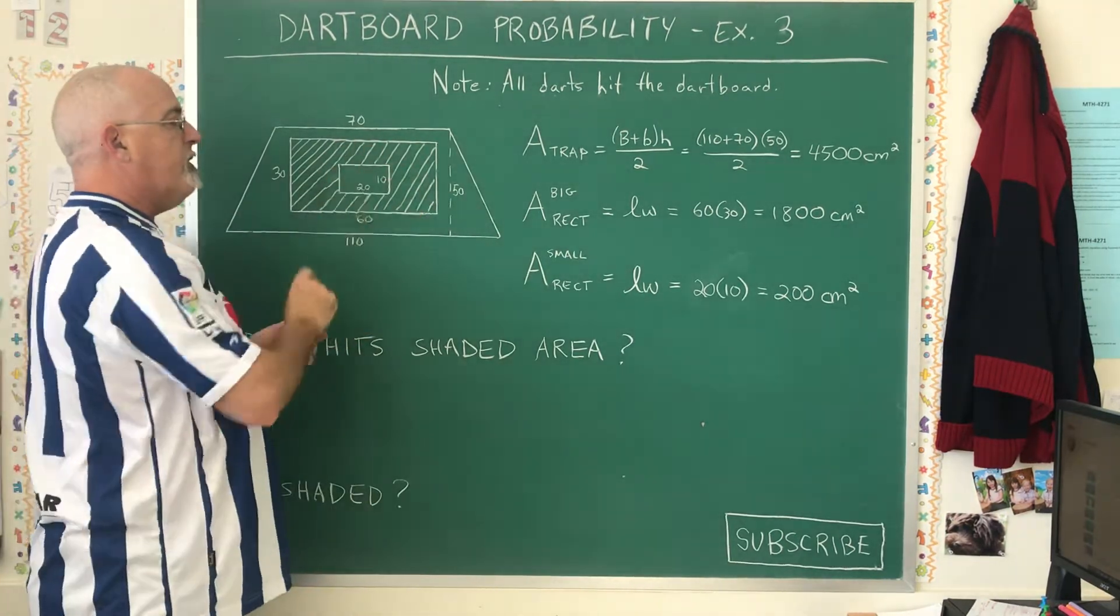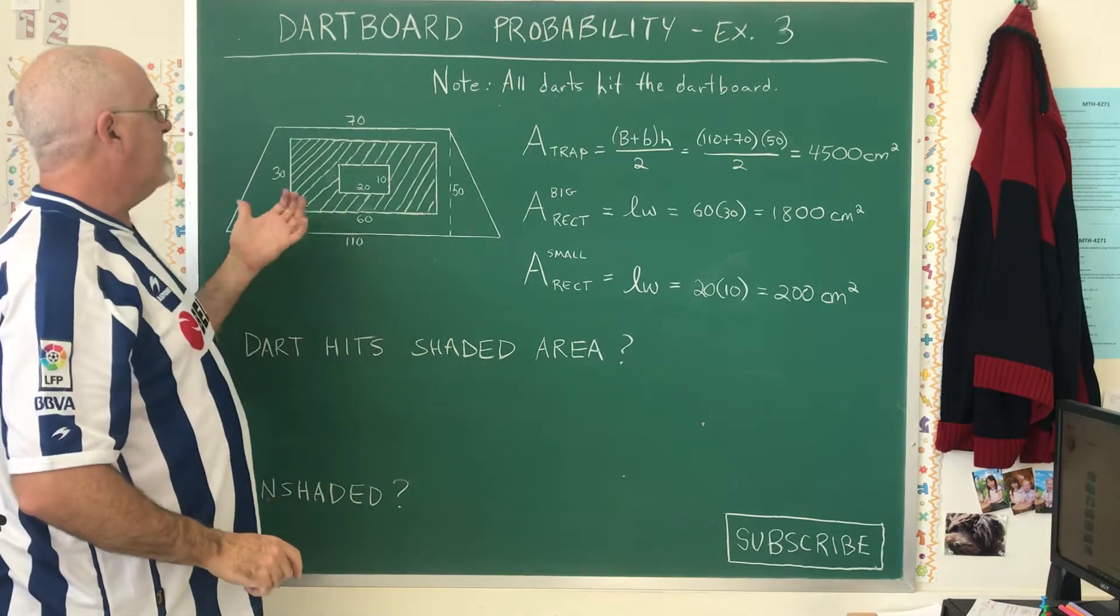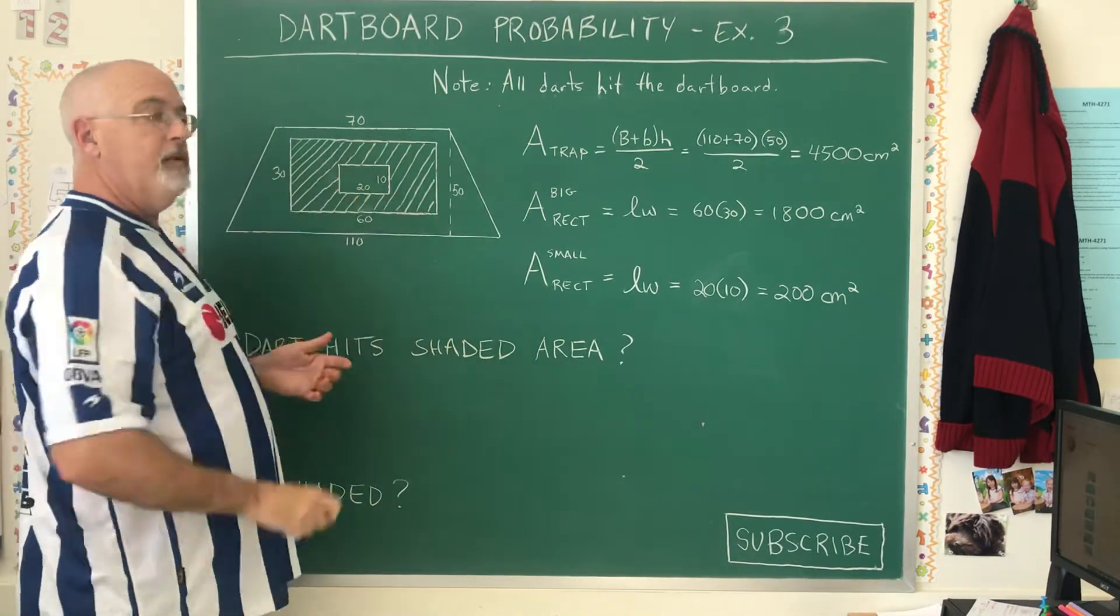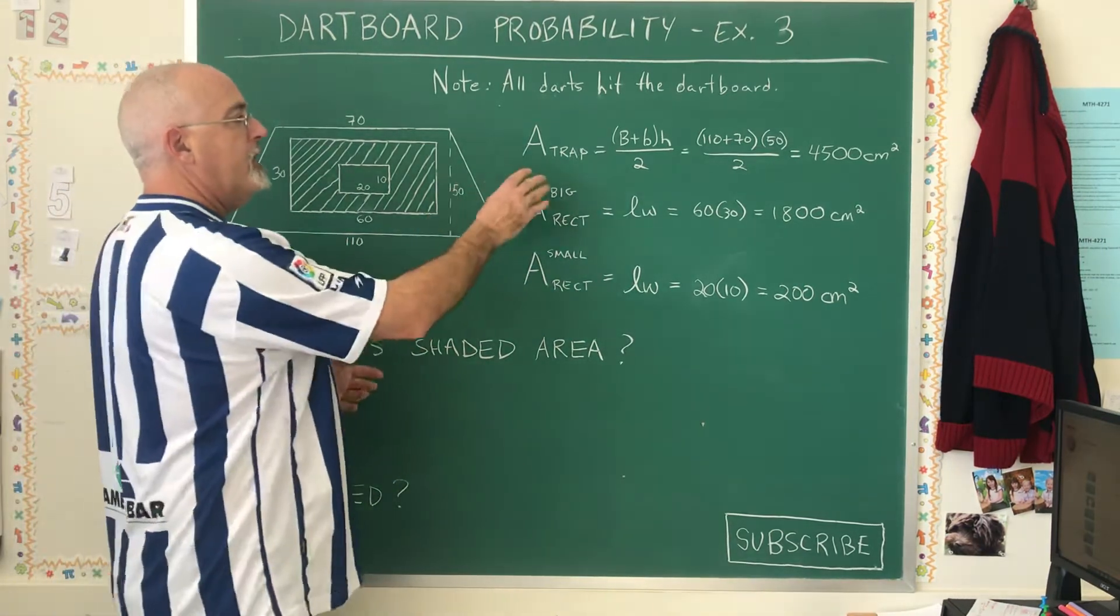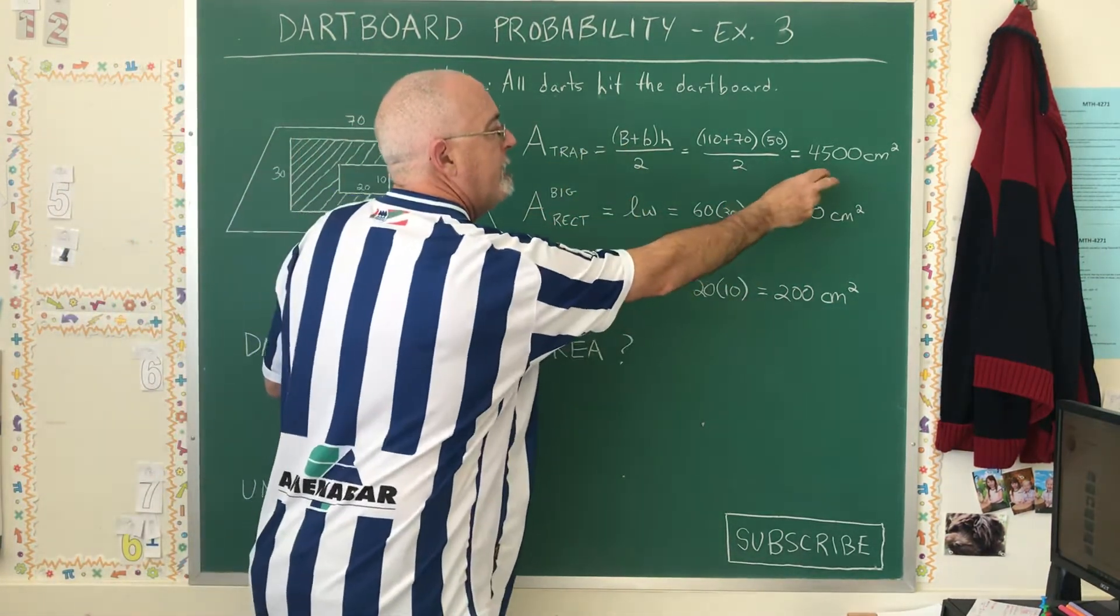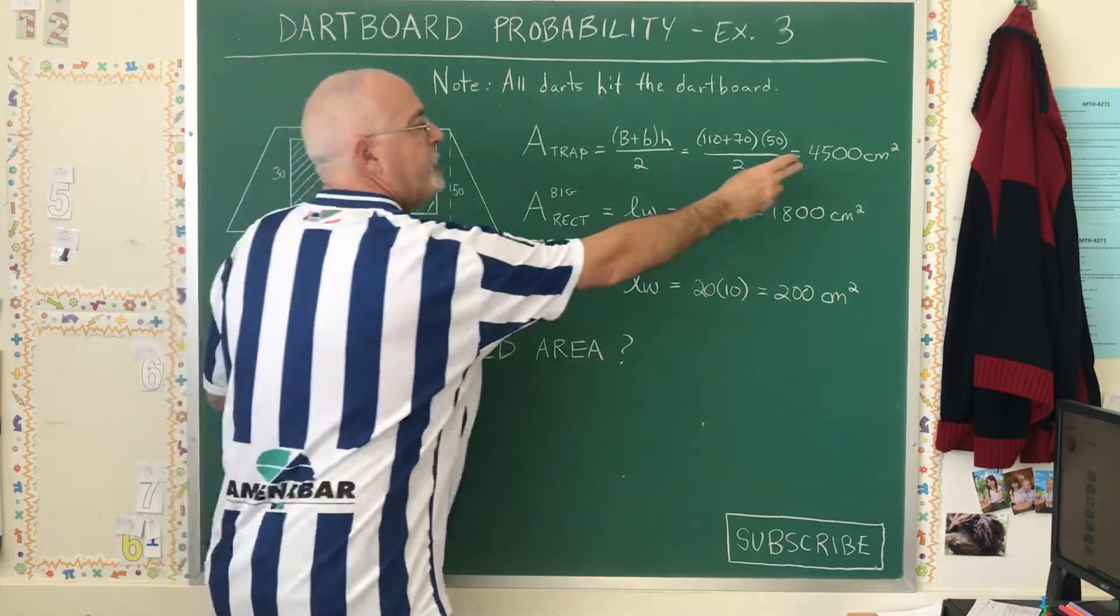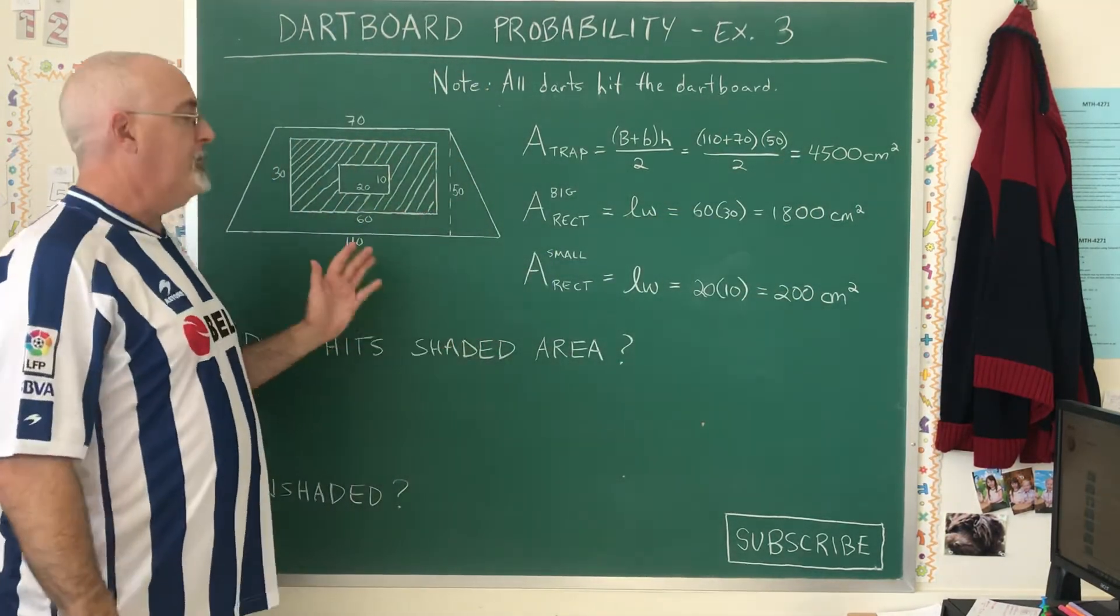Inside it we have a shaded rectangle with a length of 60 and a width of 30, and inside that we have an unshaded rectangle with a length of 20 and a width of 10. I've gone ahead and done the area formulas ahead of time, and we can see that the areas are 4500, 1800, and 200 centimeters squared respectively.